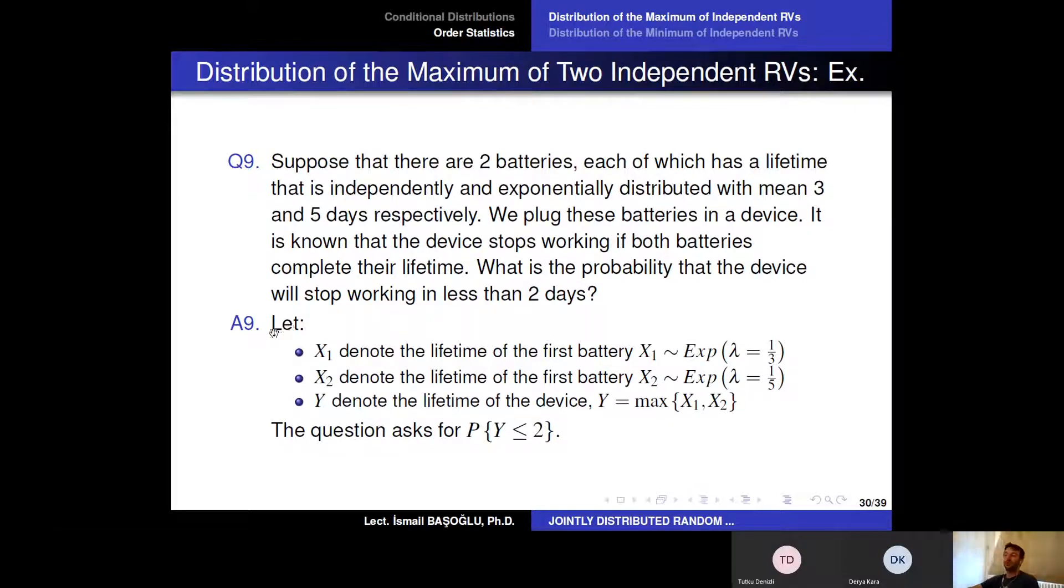Now we are going to solve this question in this mathematical representation. We will say that X1 is the lifetime of the first battery and X1 is exponentially distributed with rate parameter 1 over 3.